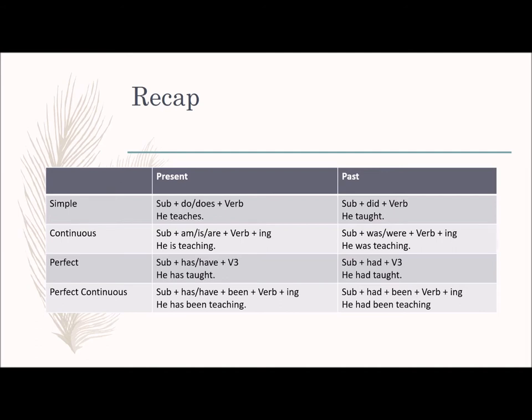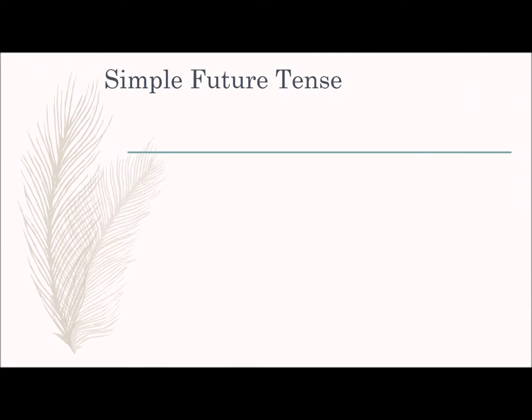Past perfect continuous — subject plus had plus been plus verb plus -ing — describes something that started long back in the past and was continuing until another activity stopped it. We express that in past perfect continuous tense. Now let's move on to future tense.